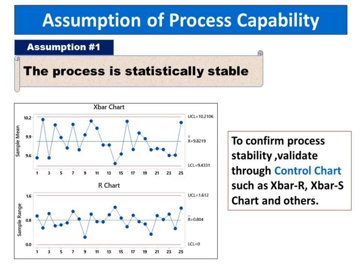The first assumption is that the process is statistically stable. To confirm process stability, validate through control charts such as X-bar R, X-bar S chart, and others.